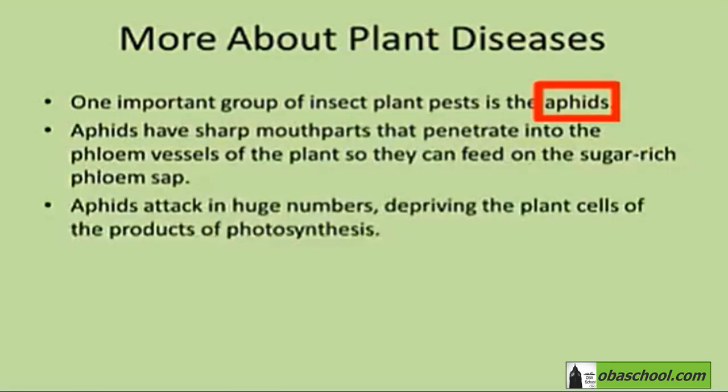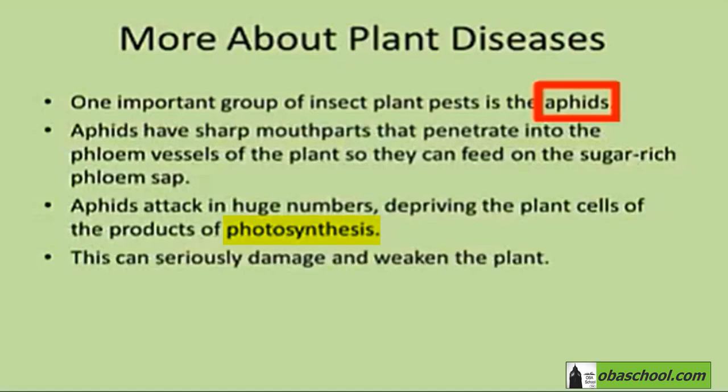Aphids attack in huge numbers, depriving the plant cells of the products of photosynthesis. This can seriously damage and weaken the plant.